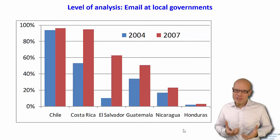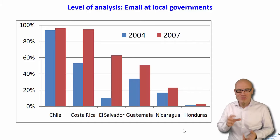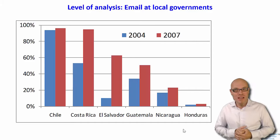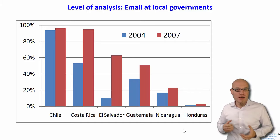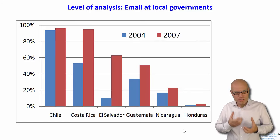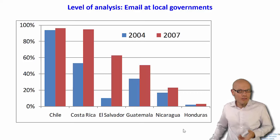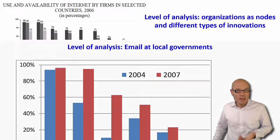There are many ways you can cut this cake, many things you can focus on. For example, you can also go to the subnational level. This graph shows the usage of email in local governments and how that has grown. So the technology we're talking about is email, and the subject of study is local governments — and that gives you an outlook on the digital divide.